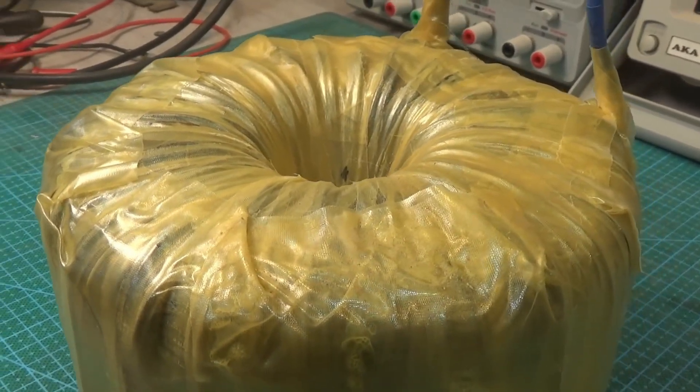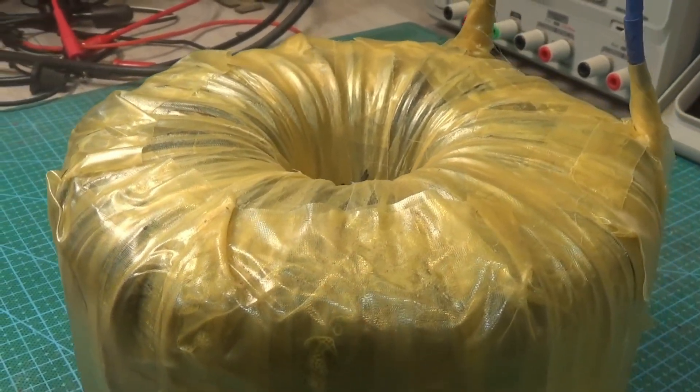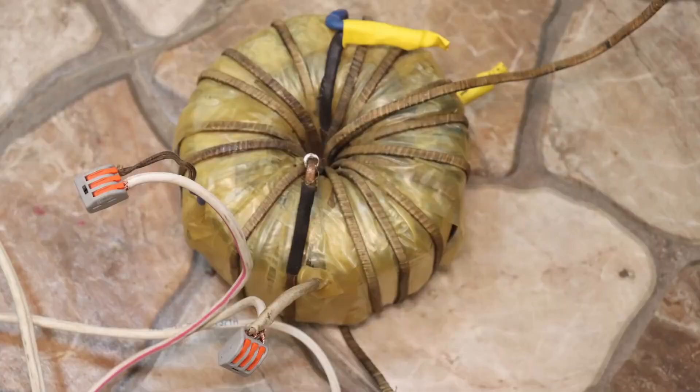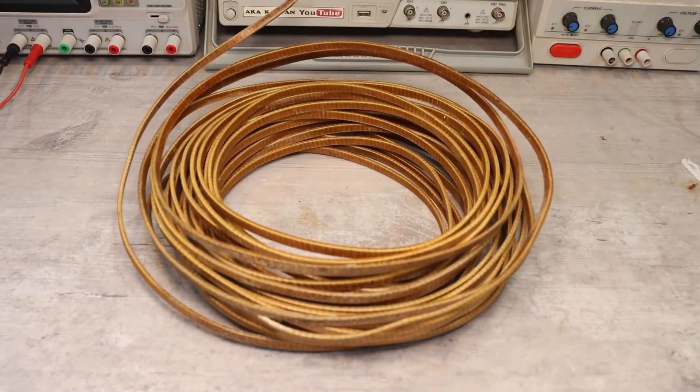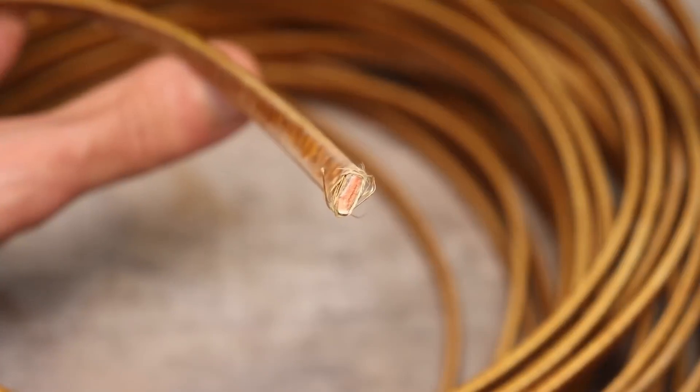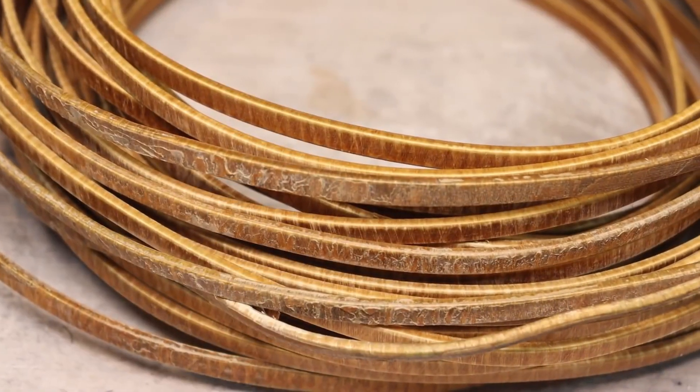After the primary was wound, the question of the secondary arose. I added one test turn and realized that the voltage here is about 1.2 volts per turn. I had a good copper busbar with a cross-section of 20 square millimeters on hand, but it would only allow for a few turns, which is clearly insufficient.